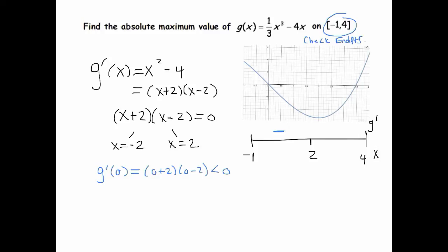And then g prime of, let's take 3 to represent the interval 2 to 4. So that's going to be 3 plus 2 times 3 minus 2, which is positive, a positive times a positive. All right, so I like to mark up my number line. Let's say, let's note that at 2, the derivative changes from negative to positive. So I've got a min here. So I've got a local min here. And I actually have an absolute min, because if the function is decreasing to 2 and increasing to 4, then there are no other candidates for mins. So that's also the absolute min. But that wasn't the question. The question was to find the absolute max.